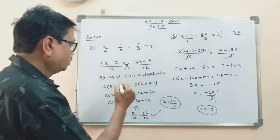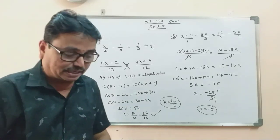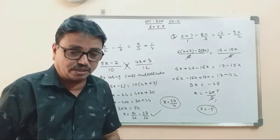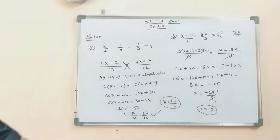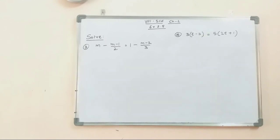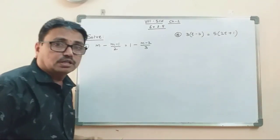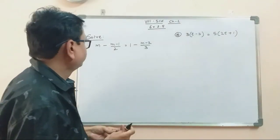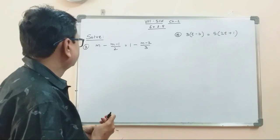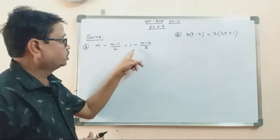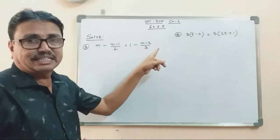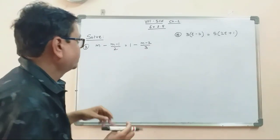2 place 3 by 10. Next, two models. M minus 1 by 2 is equal to 1 minus M minus 2 by 3.